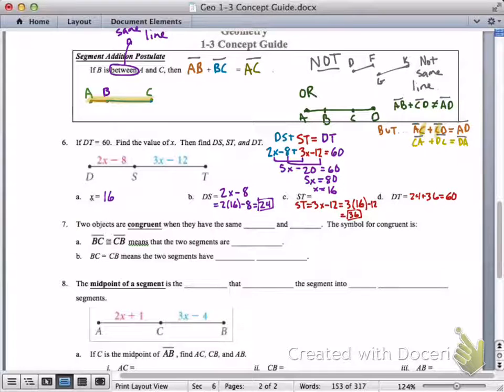One more set of definitions here we need to talk about. Two objects are congruent if they have the same size and shape. The symbol for congruent is an equal sign with a little squiggly thing over it. That means congruent. Equals means that the value, the numbers are the same. Whereas congruent means that things are the same. When it says that BC is congruent to CB right here, that means the two segments are congruent. Here, if it says BC is equal to CB, that means that the two segments have the same length. That their number values are the same.